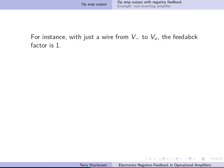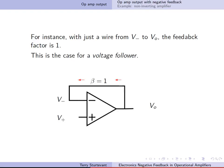For instance, with just a wire from V minus to V out, the feedback factor is 1, and this is the case for a voltage follower.